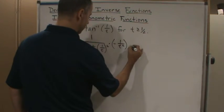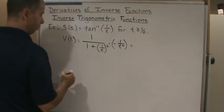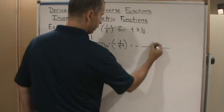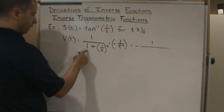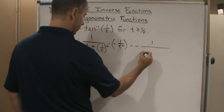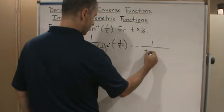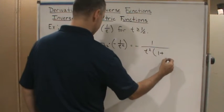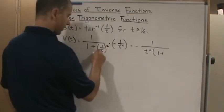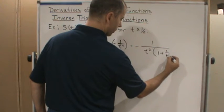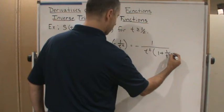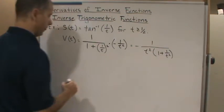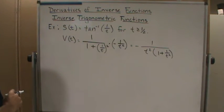Now we're going to simplify this. We have negative times negative, so we get 1 over t squared times 1 plus 1 over t squared.